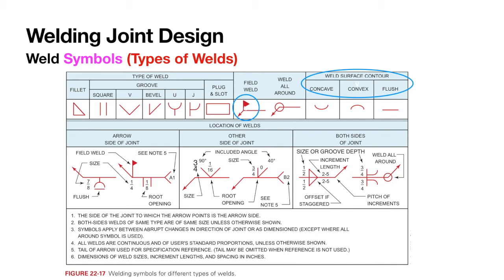Additionally, the weld surface can be contoured. After welding, either the weld bead looks like a concave shape or a convex shape, or perhaps it should be ground to make it flush or flattened. Based on the type of weld bead and the surface characteristics, we can define weld surface contour.